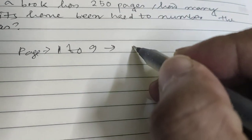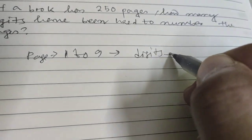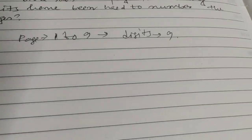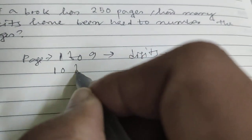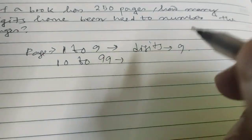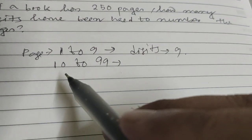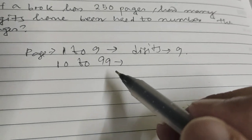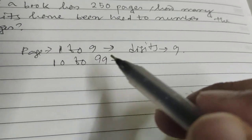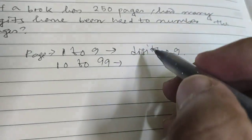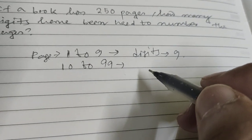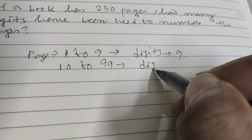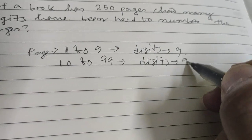So total digits is 9, meaning single digits in each page. Then from 10 to 99, how many pages are there? Total 90 pages, meaning 99 minus 10 is 89, plus 1 equals 90. For each page we will use 2 digits, so total digits is 90 times 2, which is 180.